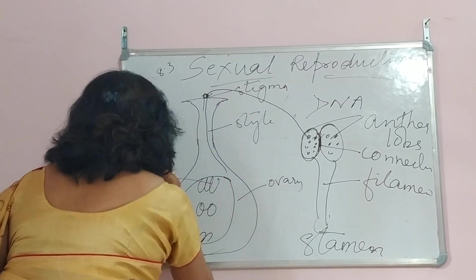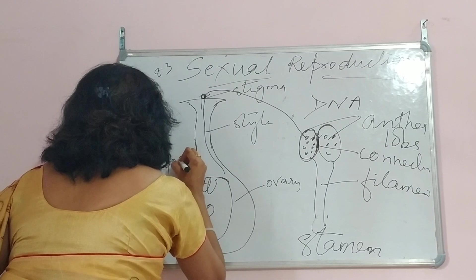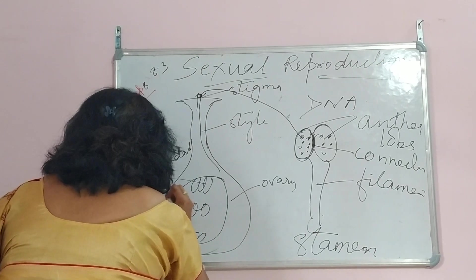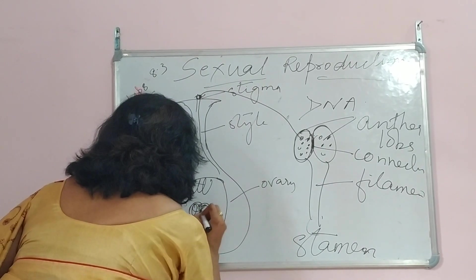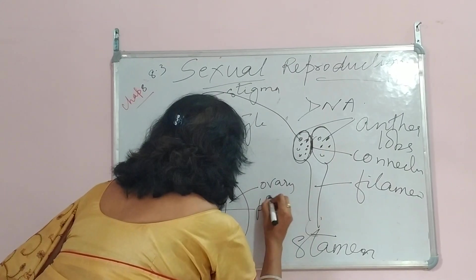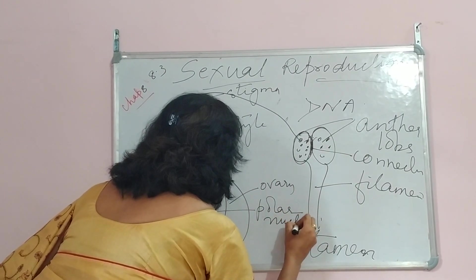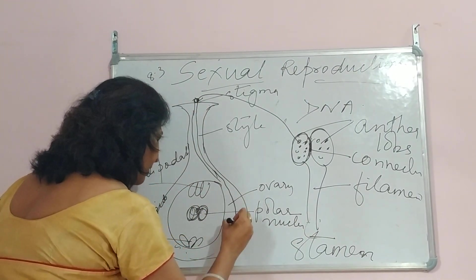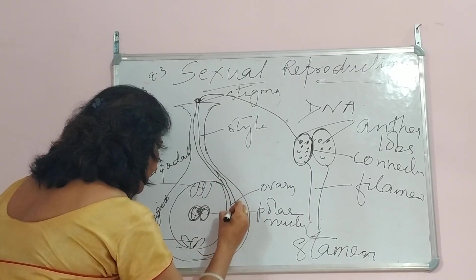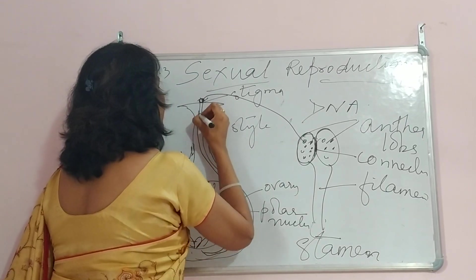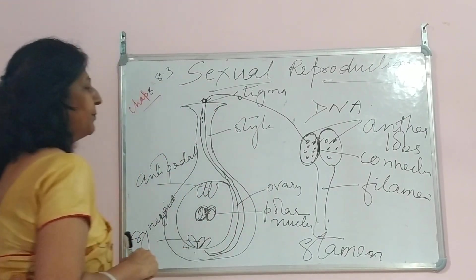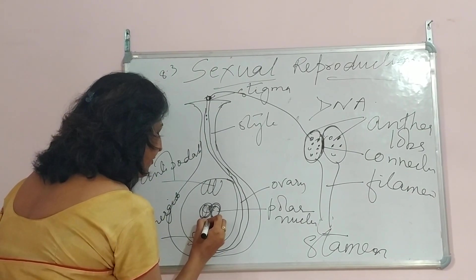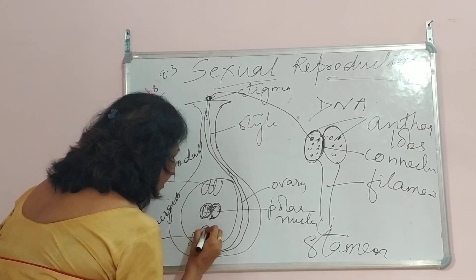Let me draw the embryo sac. These are the antipodals. These are the synergids. And these two are the polar nuclei. So finally the pollen grain germinates and grows. It comes over here and carries two male nuclei.